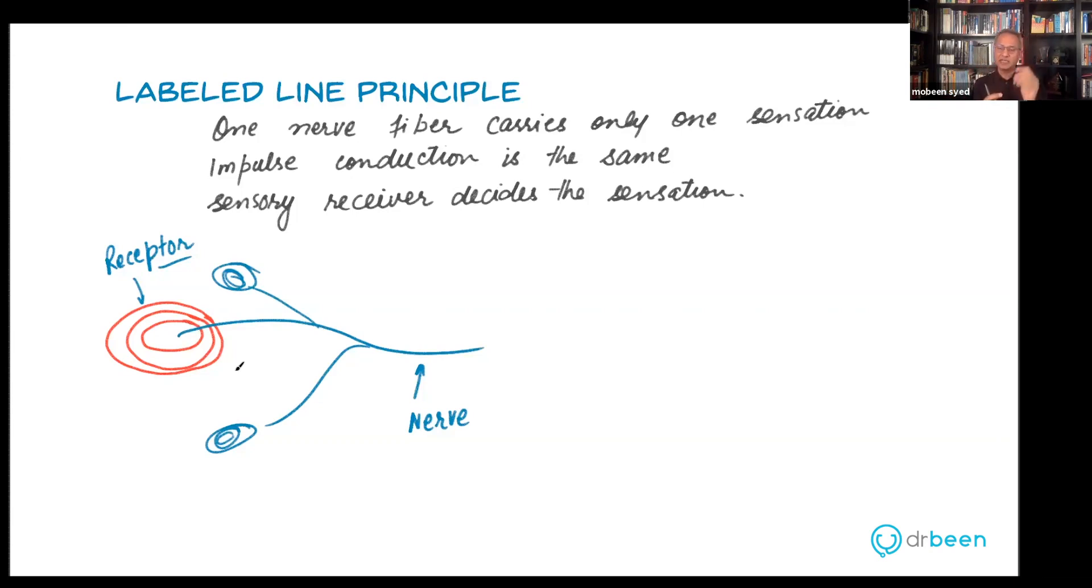You can label that nerve. In anatomy you label different structures. You can label a nerve to say this is a labeled line. This is a line for temperature, this is a line for pressure, this is a line for vibration, and so on. Does this make sense?